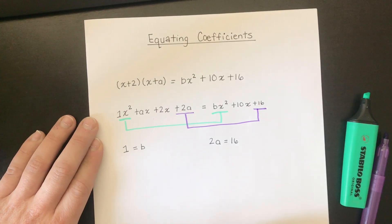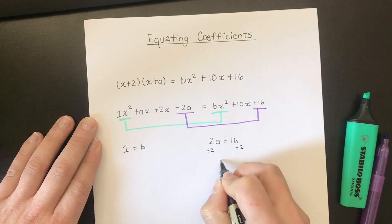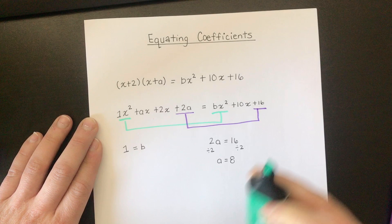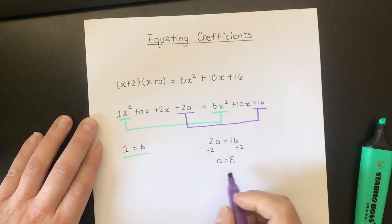Well if 2 times by a is equal to 16 I can divide by 2 on this side and divide by 2 on this side and a is equal to 8. There you have it. We found the values. b is 1 and a is 8.